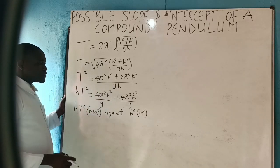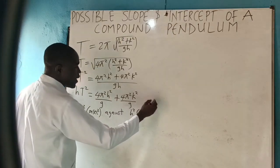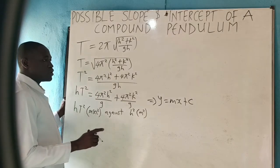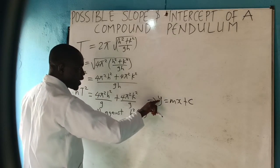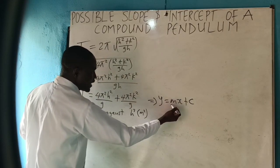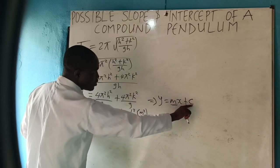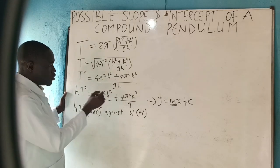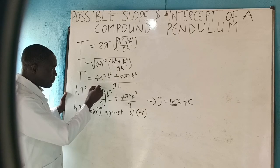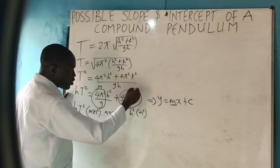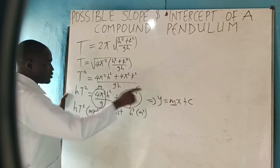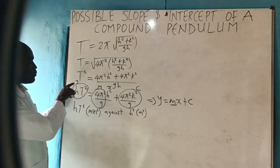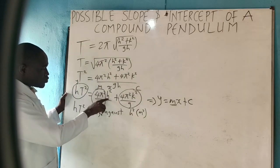Now comparing this with the standard equation of a straight line y equals mx plus c: when you plot y against x, whatever is beside x becomes your slope m and the remaining constant becomes your intercept c. Since we are plotting hT squared against h squared, the coefficient of h squared becomes your slope m and the remaining term becomes your intercept c.